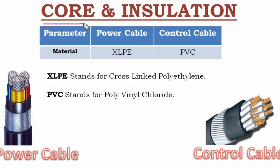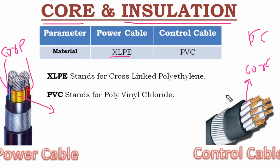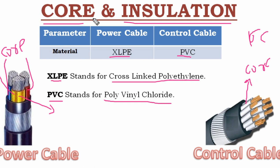Now we will learn about the core and insulation. In the power cable, there are 3 cores identified by the colors red, yellow, and blue. In the control cable, there are 16 cores, all gray in color. The insulation material used in the power cable is XLPE — Cross-Linked Polyethylene — and in the control cable, PVC — Polyvinyl Chloride — is used.